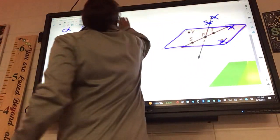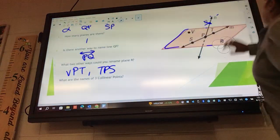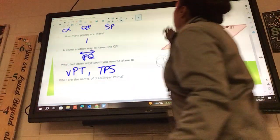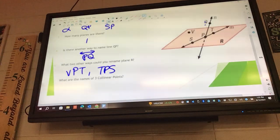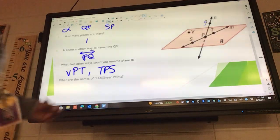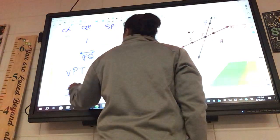What are the names of three colinear points? So colinear means what? They're on the same line. So we need three points that are on the same line. What is something that qualifies? SPT. I love it.